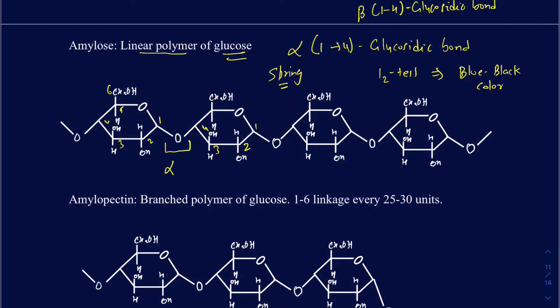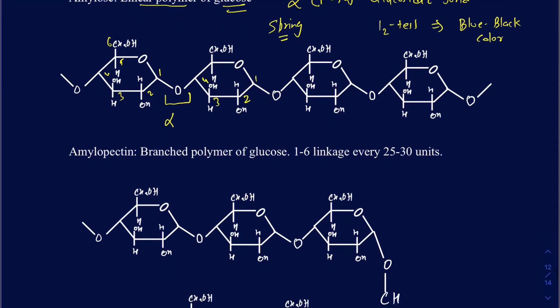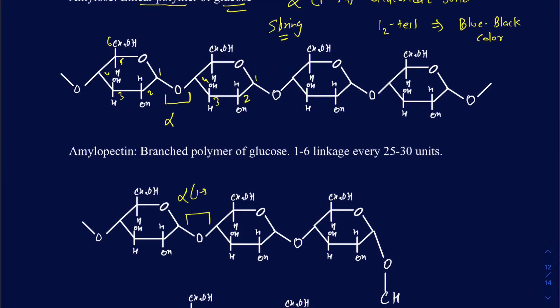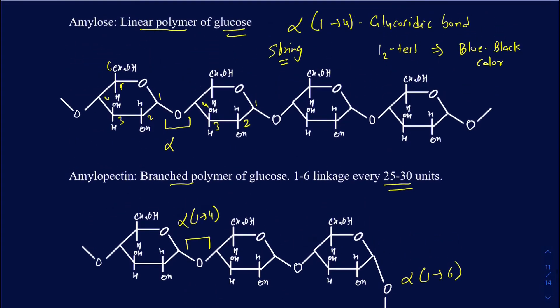Now let's talk about amylopectin. It's kind of similar to amylose — you're going to have the alpha-1 to 4 linkage between the glucose units. But in addition to that, every 25 to 30 units of glucose you're going to have an alpha-1 to 6 linkage, and that's what gives it a branched polymer. Since it's a branched polymer, you don't really have the iodine fitting well into the amylopectin, and as a result it doesn't give that blue-black color that amylose gives when running an iodine test.